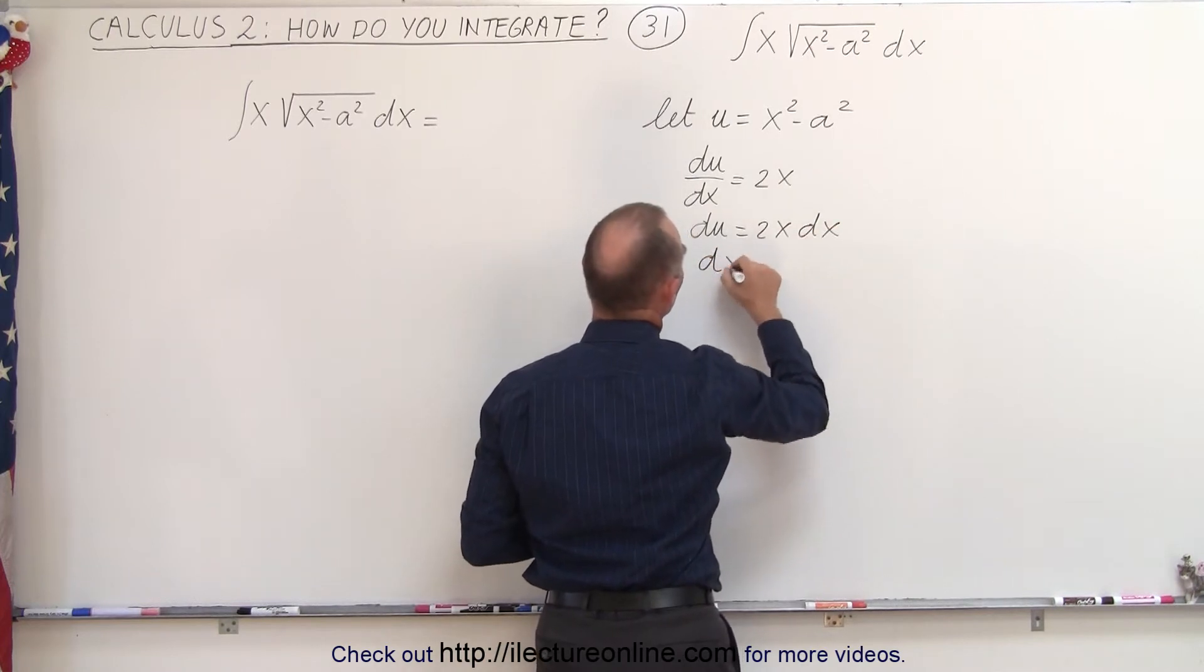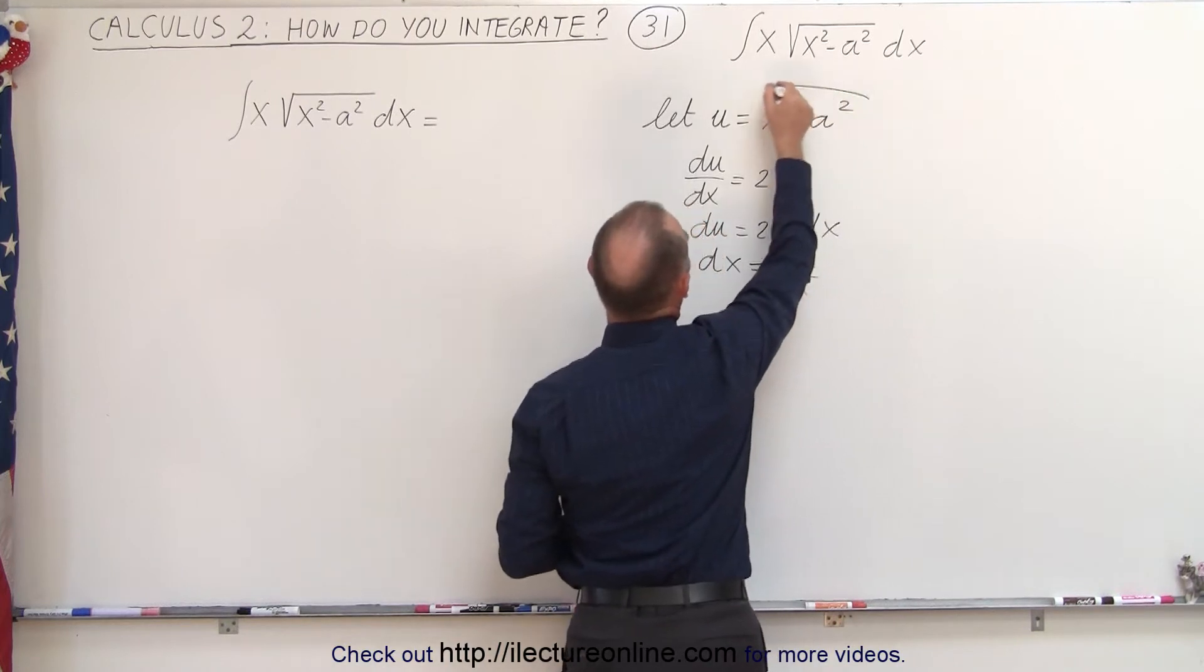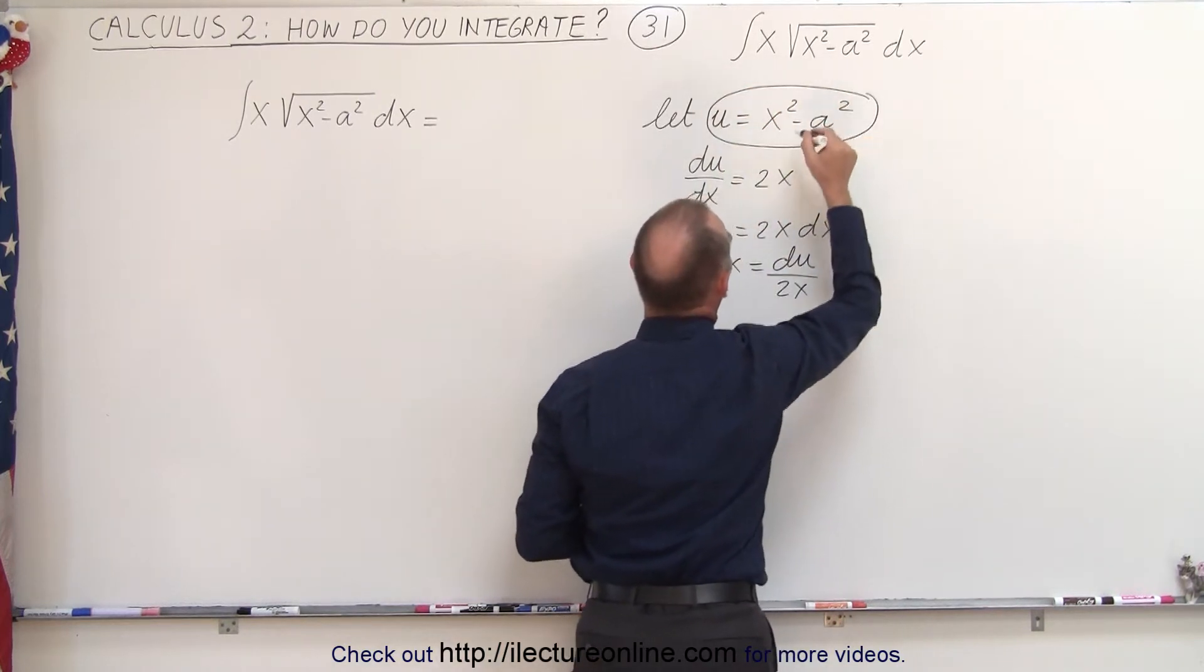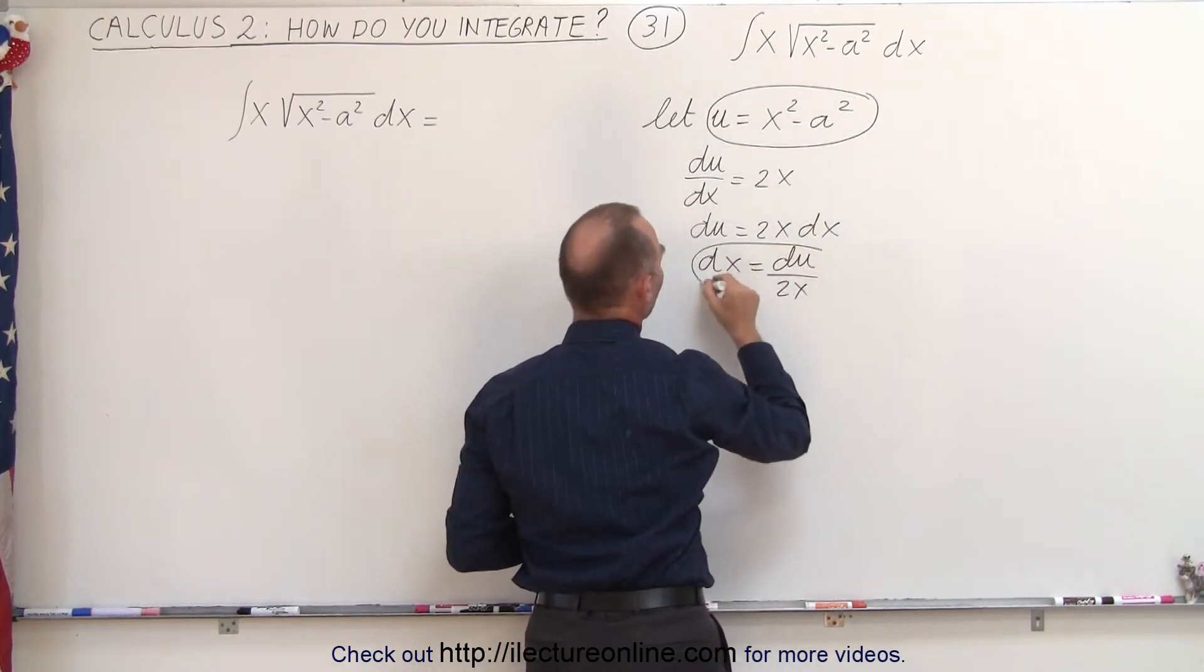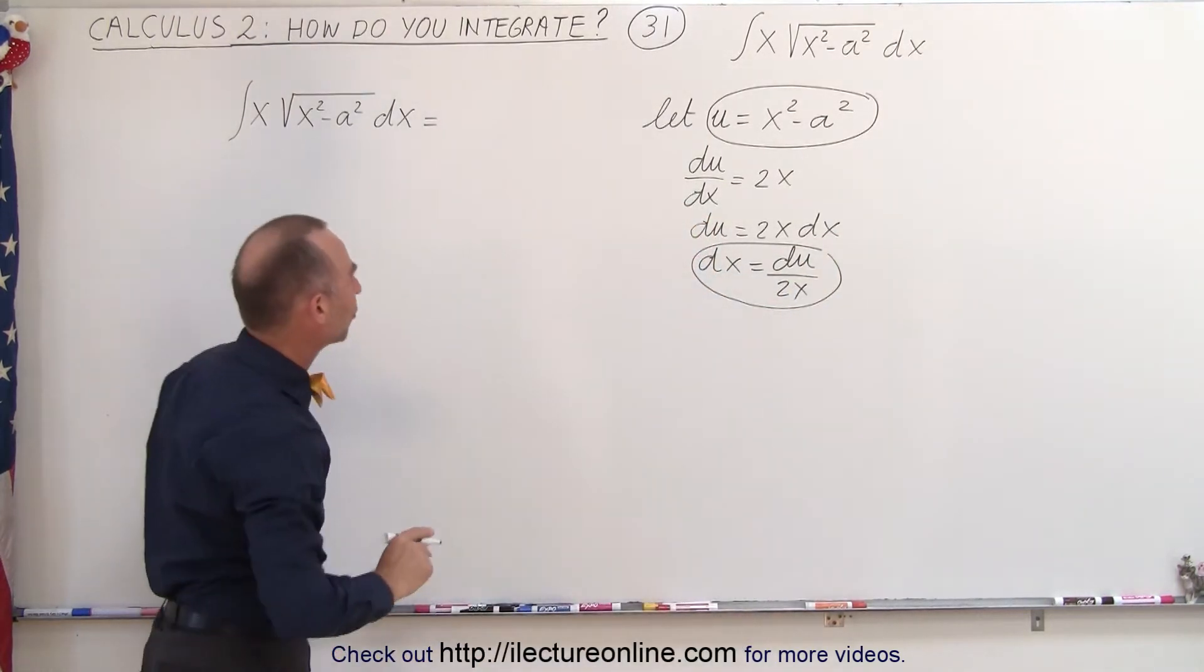Or dx is equal to du divided by 2x. And then we're going to replace x squared minus a squared by u, and we're going to replace dx with du over 2x. And let's see what happens when we do that.